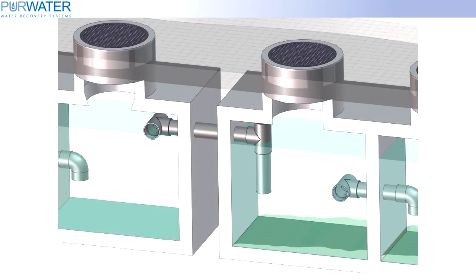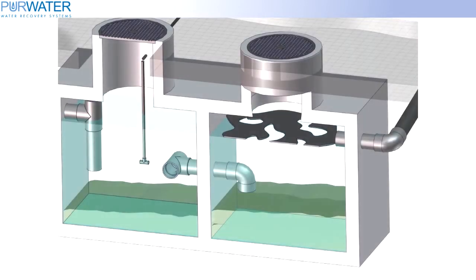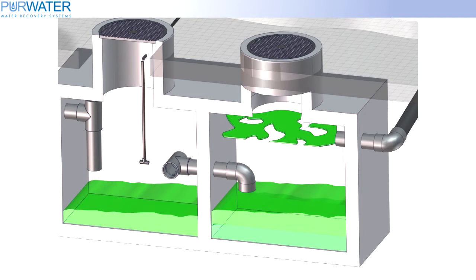Connecting the tanks together requires a high-level pipe connection with a drop-down to that mid-water level. Again, this will help prevent floatable materials from passing through each tank and compartment.